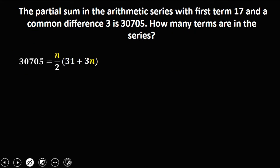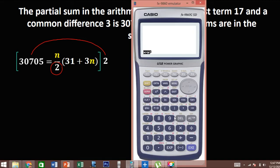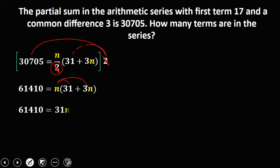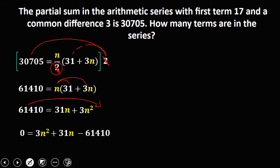From this equation, we eliminate the denominator by multiplying the whole equation by 2. So 30,705 times 2 is 61,410. Distributing the 2 eliminates the fraction, giving n times 31 plus 3n. Distributing n gives 31n plus 3n squared. Equating to zero and transposing, we arrange from highest exponent: 3n squared plus 31n minus 61,410 equals 0.